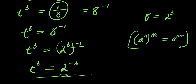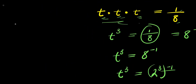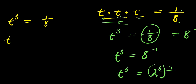This is how we are going to solve it. I will recopy this: t times t times t equals t to the power 3, which equals 1 divided by 8. I can have t to the power 3 equals — I can express 1 as 1 to the power 3, and I can express 8 as 2 to the power 3. Have you seen it?